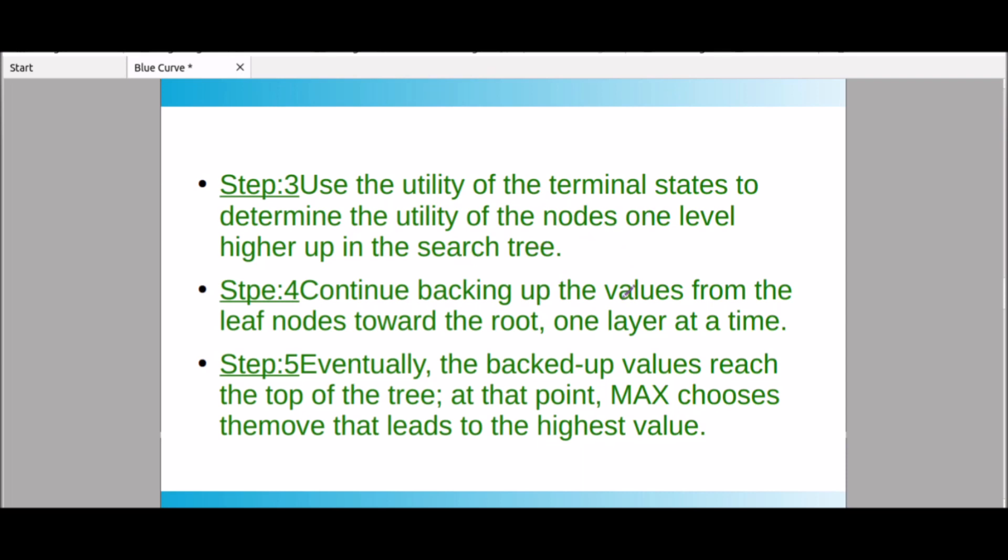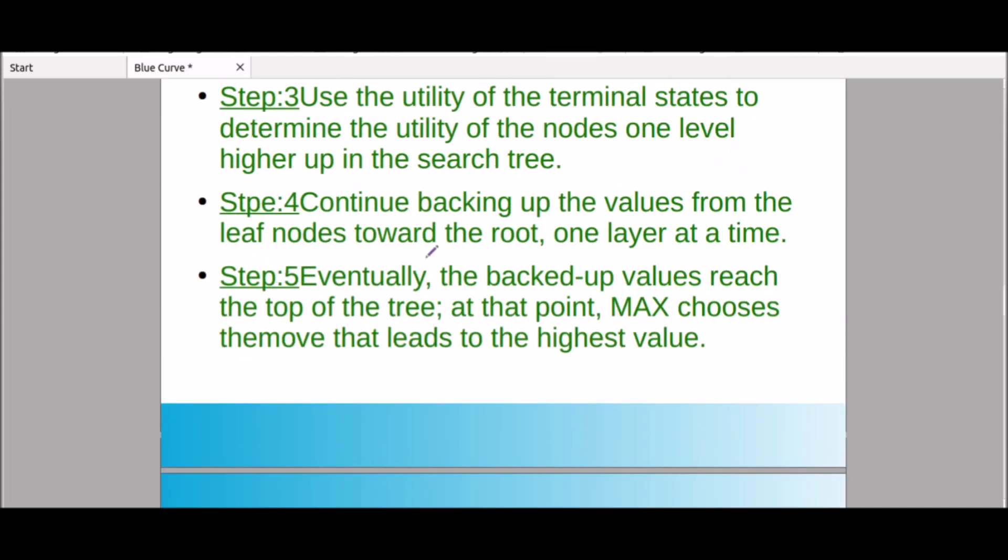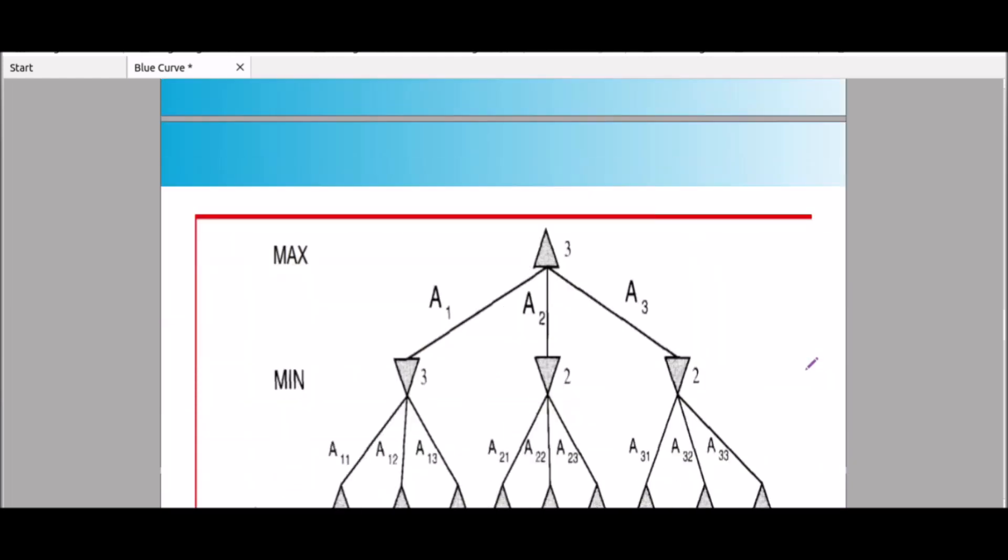Let me complete these steps first. Continue backing up the values from leaf nodes toward the root. Fill up the tree. Eventually the backed up values reach the top of the tree. At that point MAX chooses the move that leads to higher values. If we choose the max, we choose the root node. Let me complete this example.